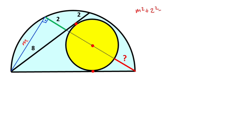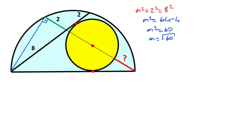M squared plus 2 squared equals 8 squared. So M squared equals 64 minus 4, therefore M squared equals 60, and M equals root 60. Let's write here: M equals root 60.